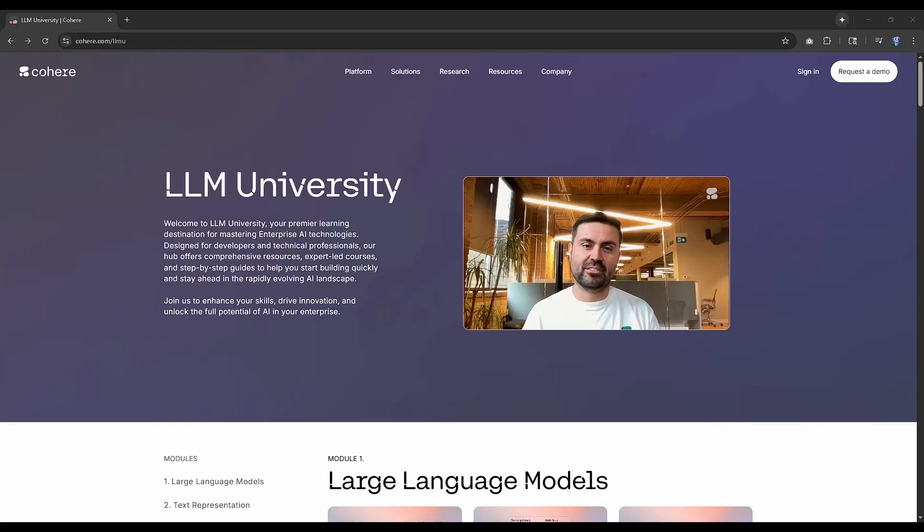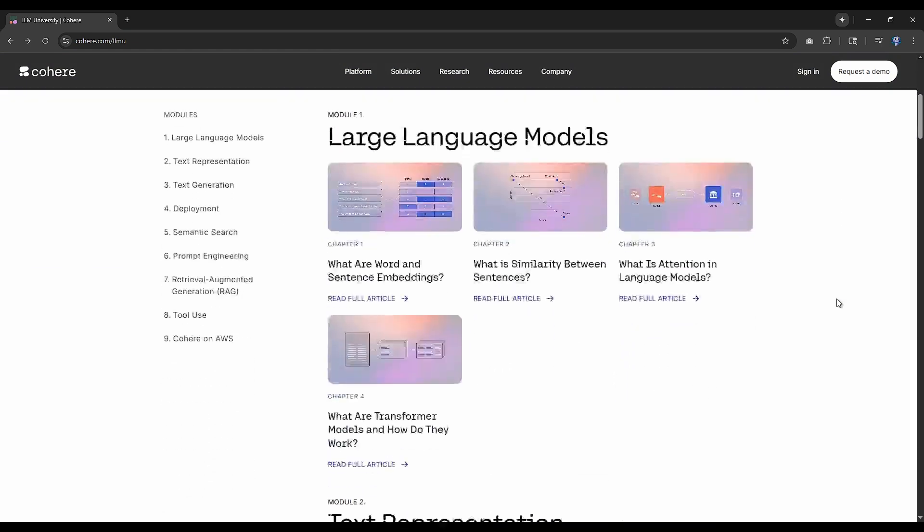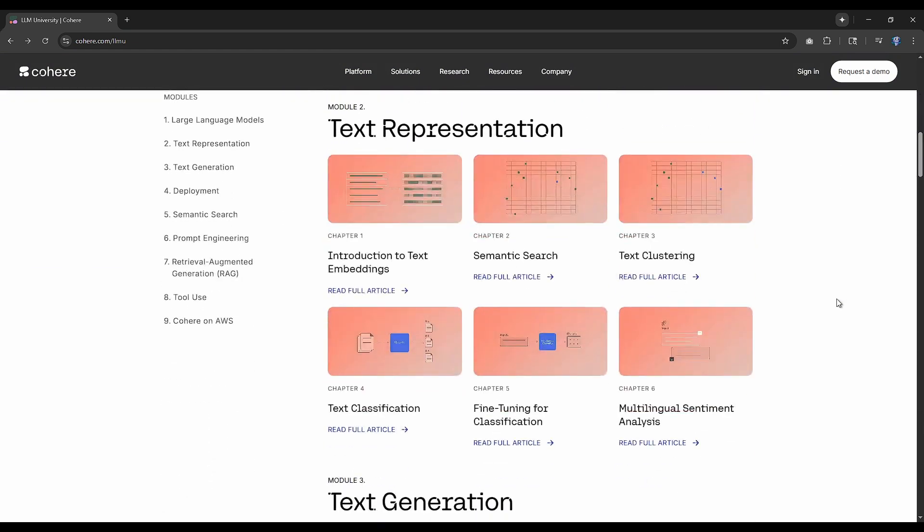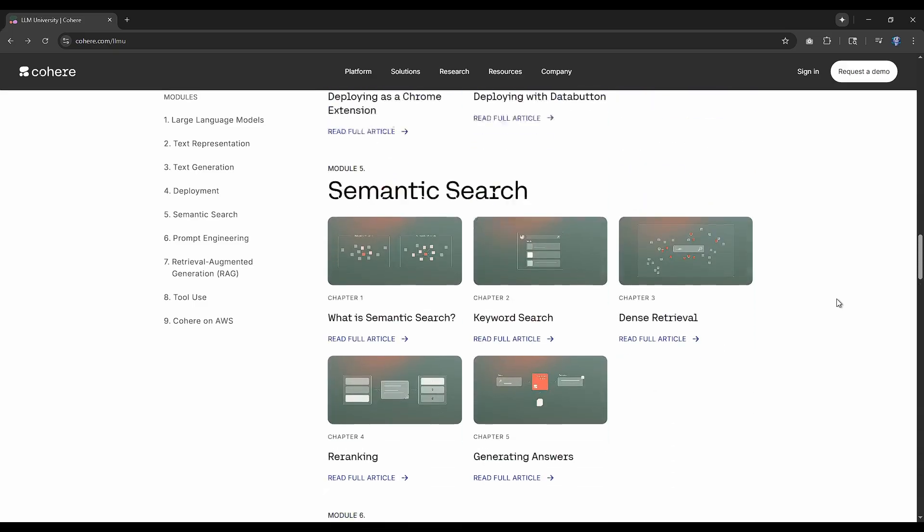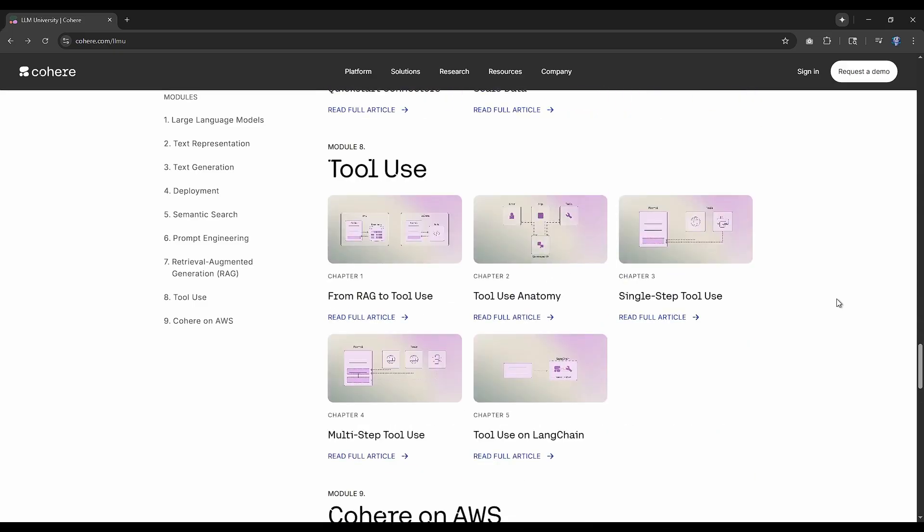Cohere has an excellent free LLM university that really goes into details of large language models, RAG, and related topics. Reading the AI engineering book first is a good step before going to Cohere's LLM university.